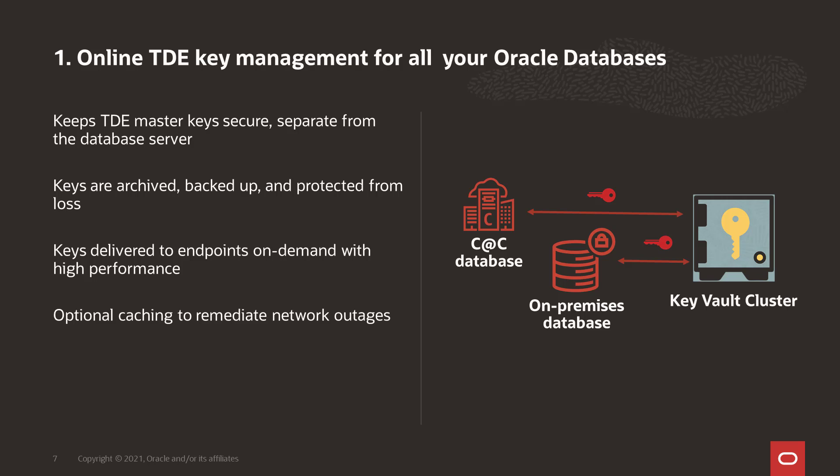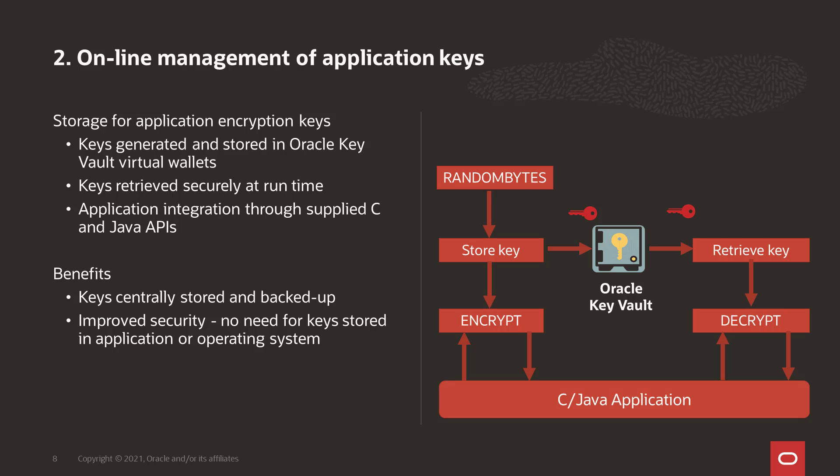The second use case is online key management for application keys. Application keys are encryption keys used by applications. One way of managing these keys is by obfuscating them, storing them in the operating system or in the code itself. However, that can leave these keys vulnerable to attack. A better solution is to store these keys centrally in Oracle Key Vault and leverage the C and Java APIs provided with Oracle Key Vault to store and retrieve them on demand as the application is running.